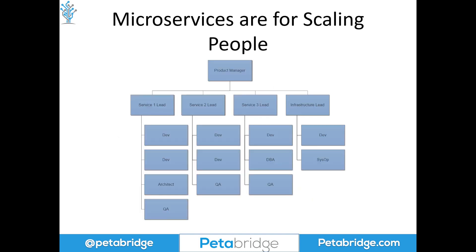Microservice architectures are really about scaling people, not products. They allow technical leaders to partition their organization along the boundaries of their services. One service can be implemented using one set of tools, and another using a totally different set. Those two services interoperate using explicit network communication contracts, such as an HTTP API or actor messaging. This allows teams to deploy and update each individual component independently, making software organizations more agile — but they aren't without their costs.